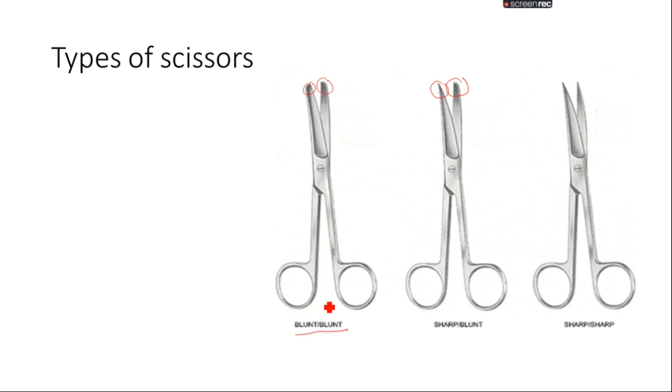Here there is no point, so blunt and blunt. Sharp and blunt. And in the sharp and sharp, the two sides of the points have edges, are pointed, they are having a point, so they are known as sharp and sharp scissors.